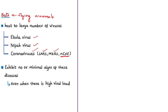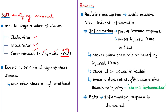These viruses are capable of causing severe and often deadly disease in humans and animals, but bats which host such deadly viruses exhibit no signs or minimal signs of disease even with high viral loads in their bodies. A study conducted by researchers in Singapore found that the reason bats can harbor these viruses without getting infected is because of bats' special immune system, which enables them to avoid excessive virus-induced inflammation.